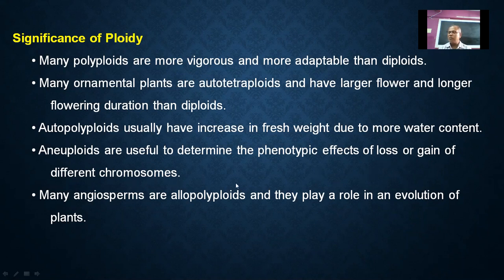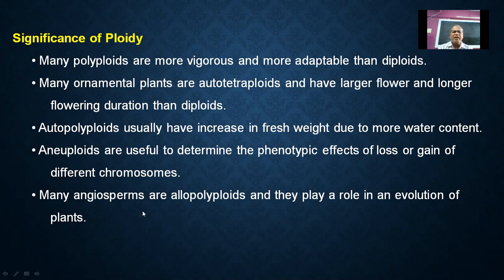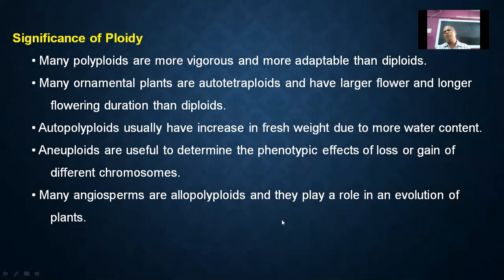Many angiosperms are allopolyploids. Angio means a case or box, and sperma means seed — so angiosperms are protected-seeded plants. Many angiosperms are allopolyploids, and allopolyploidy plays a vital role in the evolution of plants. It is considered one of the most important mechanisms in plant evolution.